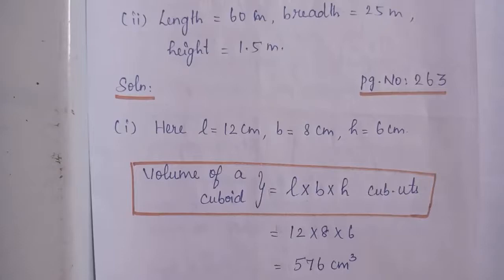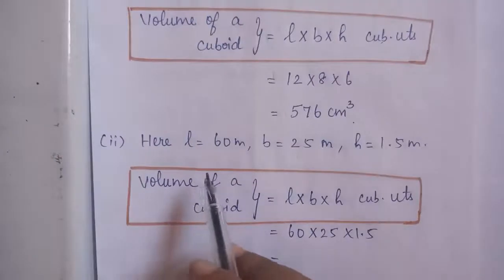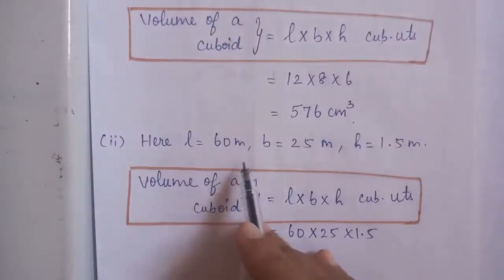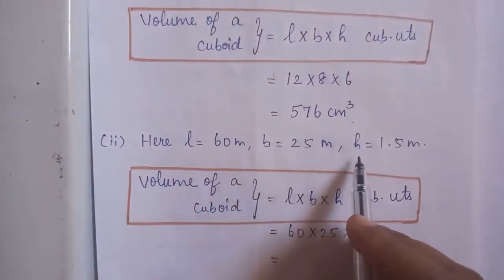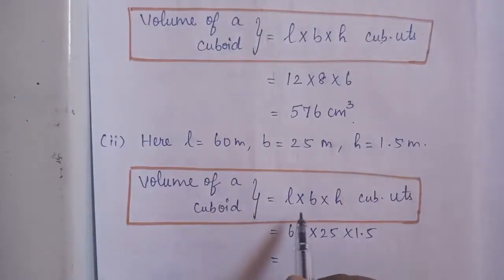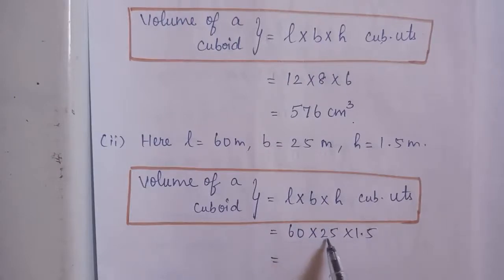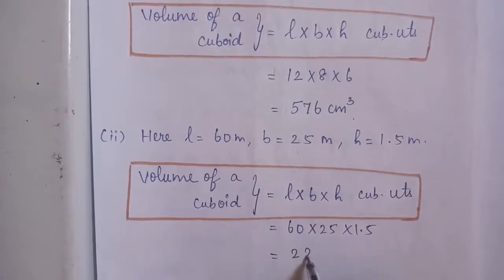Because here you have length, breadth and height — it is in 3 dimensions, so we mention it as cm cube, that is cubic units. Second subdivision: L is equal to 60 m, B is equal to 25 m, height H is equal to 1.5 m. Volume of a cuboid is equal to length into breadth into height cubic units, which is equal to 60 into 25 into 1.5 = 2250 m cube.